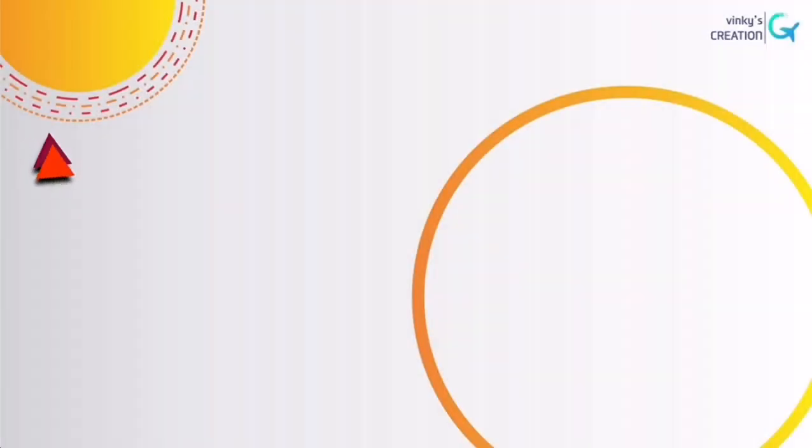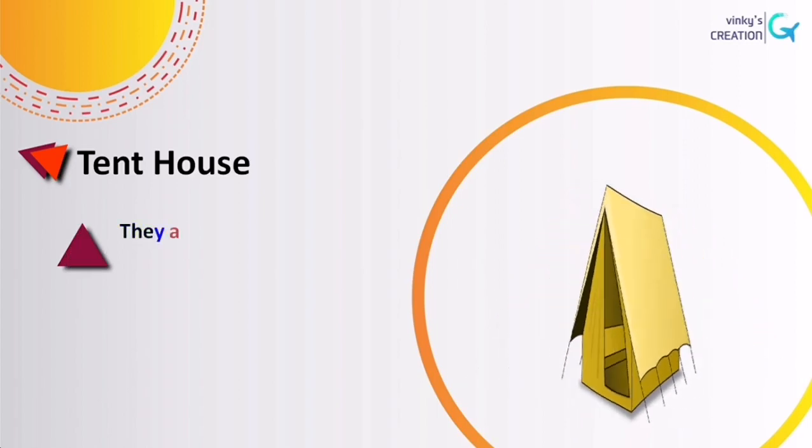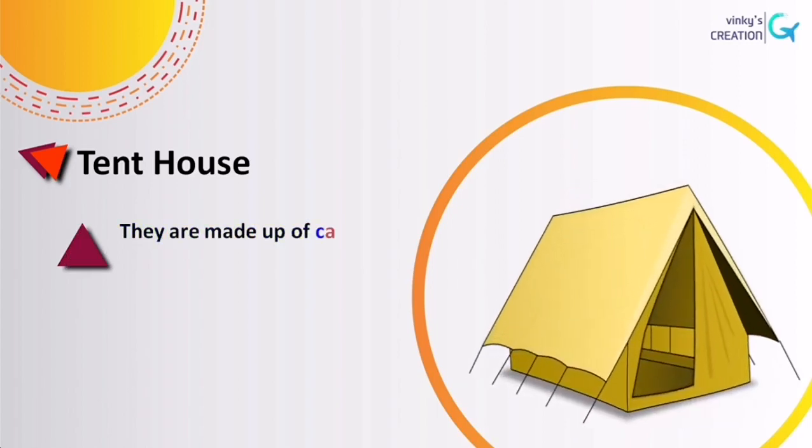Next house is a tent house. They are made up of canvas cloth to make them waterproof. These houses are easily movable and temporary.